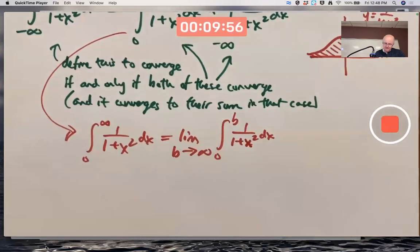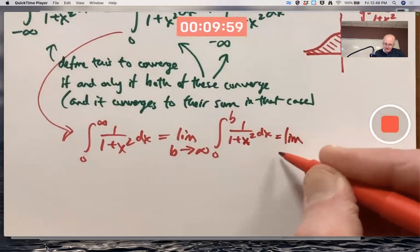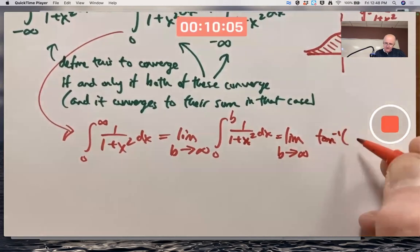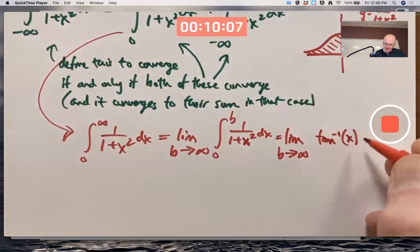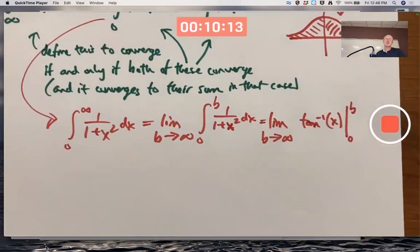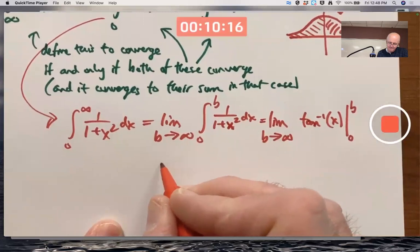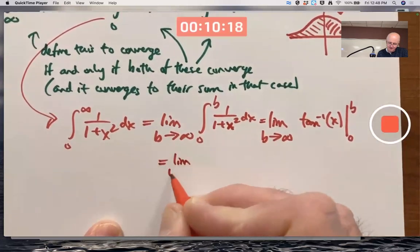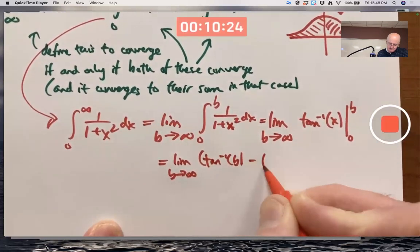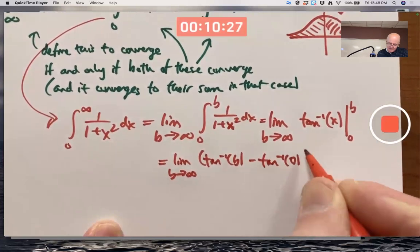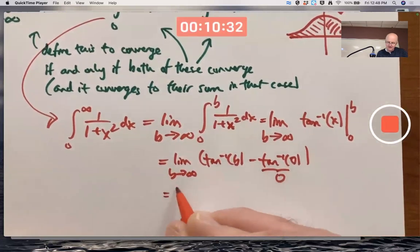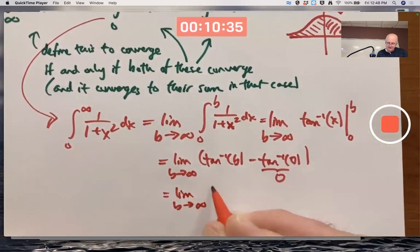So that's a memorized integral. It's the inverse tangent function. You can also write arctangent. I remind you once again, calculators use inverse tangent, Mathematica uses arctangent. I'm using the fundamental theorem of calculus here. Inverse tangent of 0 is 0. You can double check that in your calculator. So this simplifies to the limit as b goes to infinity of the inverse tangent function.